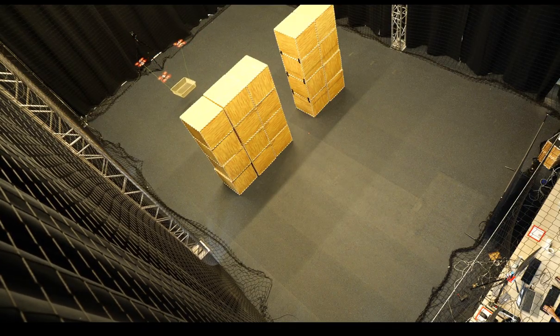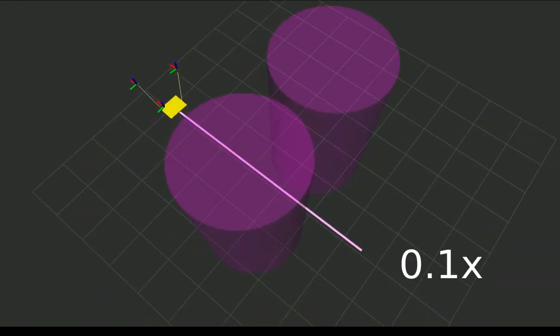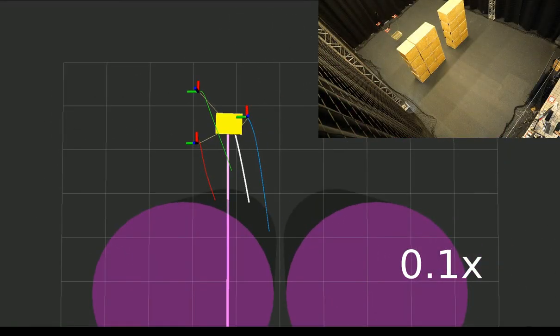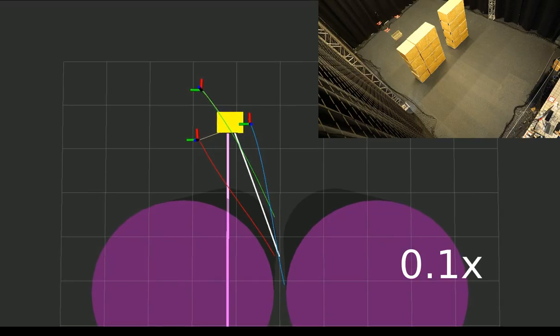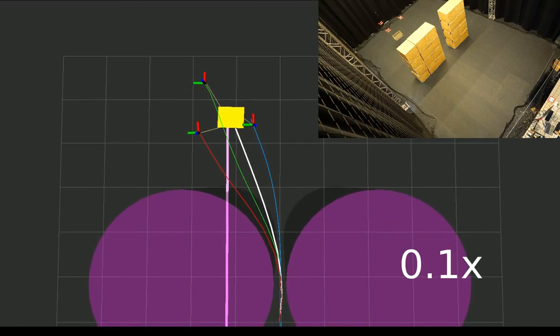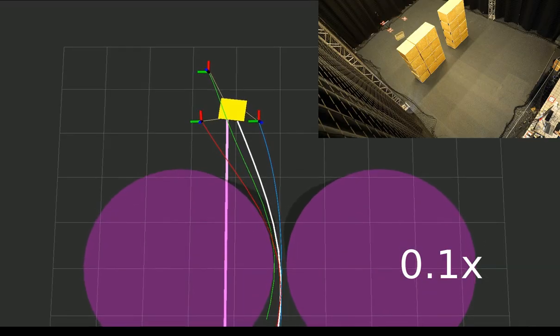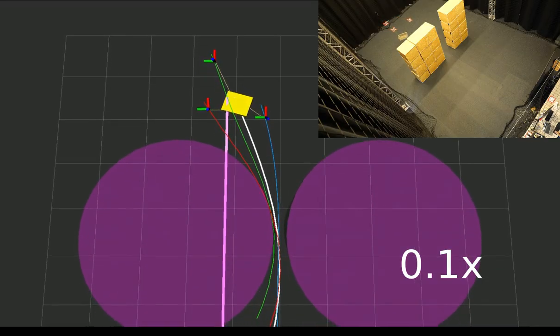Our algorithm solves an online kinodynamic motion planning problem. Given a load reference trajectory in purple color, the planner generates predicted reference trajectories for each quadrotor in a receding horizon fashion to collaboratively execute the white-colored predicted payload trajectory.